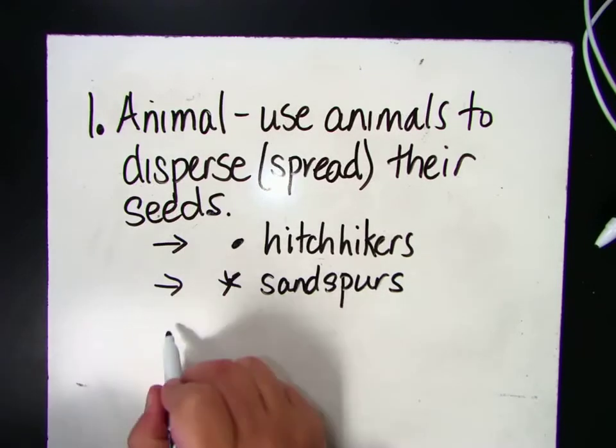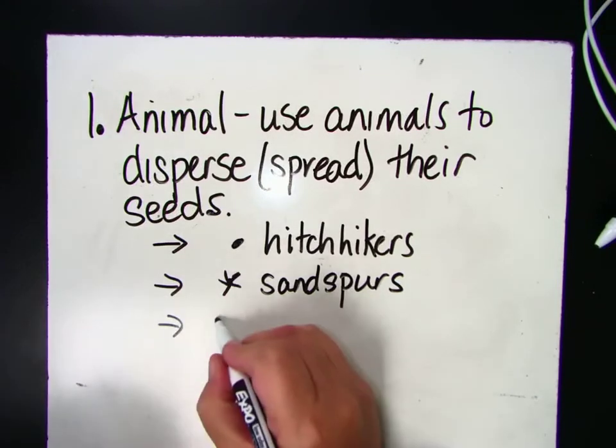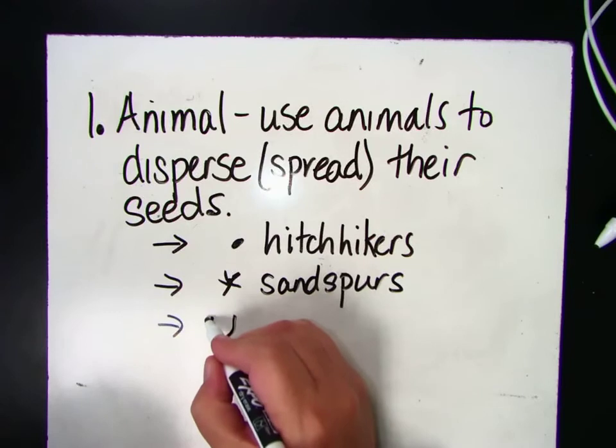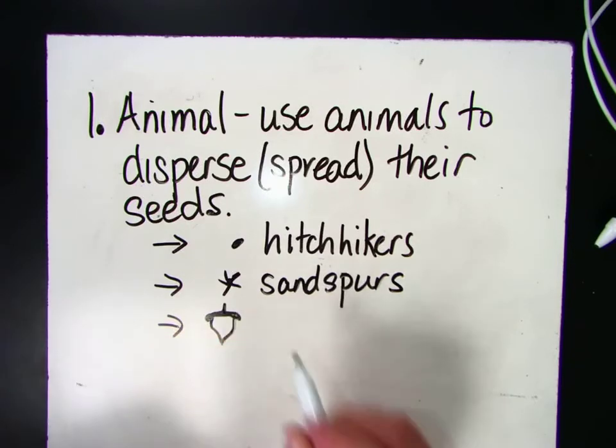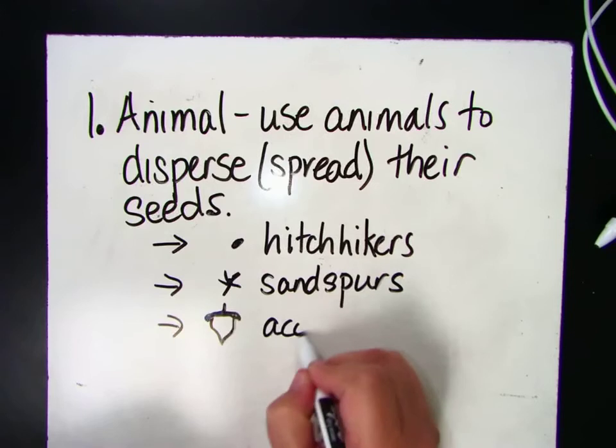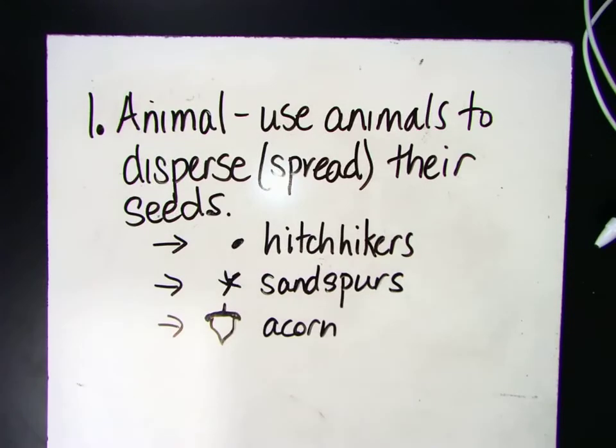Another way animals disperse seeds is, think of our little friend from Ice Age, where he takes an acorn and he buries it under the ground. Well, an acorn is just a seed, and that acorn will actually eventually grow into a tree.